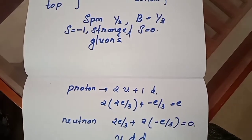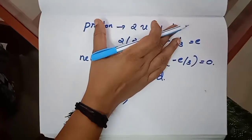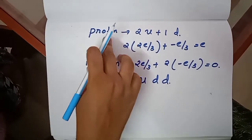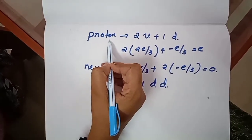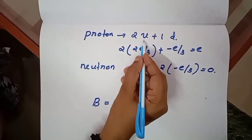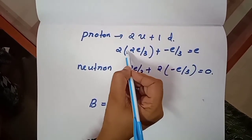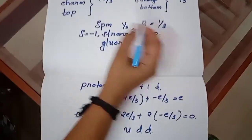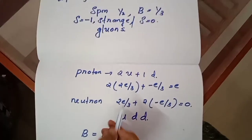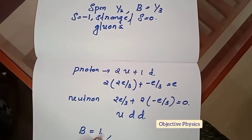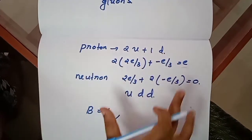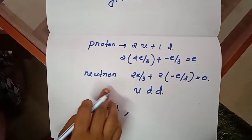Next, the composition of baryons and mesons. Neutrons and protons come under the category of baryons. Protons consist of two up quarks and one down quark. Their total charge is: 2×(2e/3) + (−e/3) = +e. The baryon number for the proton is 1, since 1/3 + 1/3 + 1/3 = 1.